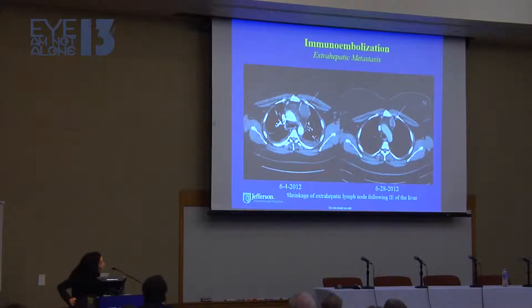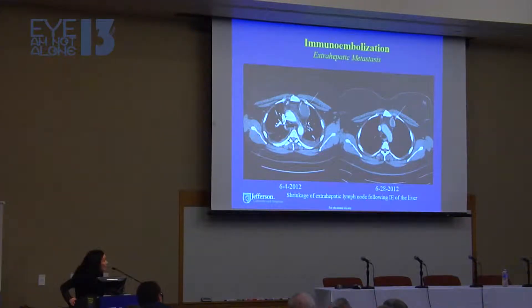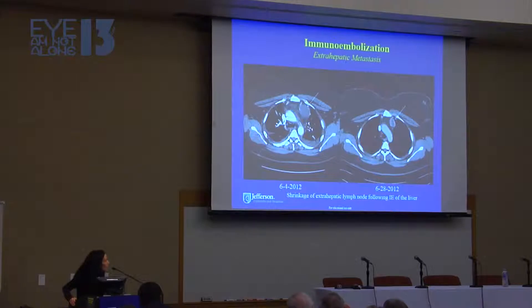This is the same patient I just showed with the liver metastases. She had a very large lymph node in her chest and emailed me telling me she had severe pain. We got a CT scan — there was a big large mass. We set her up to get radiation, but right before radiation, we got another scan and it had shrunk, right after her treatment to her liver. Apparently, her immune system probably caused this to shrink.